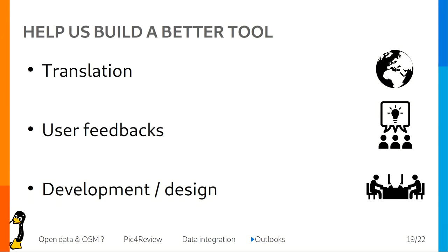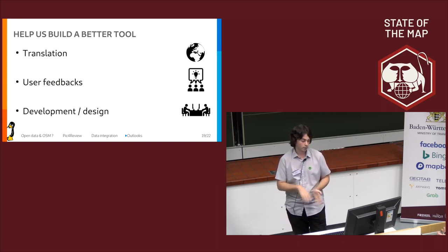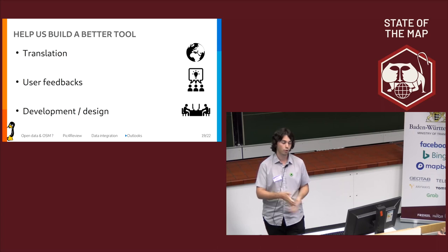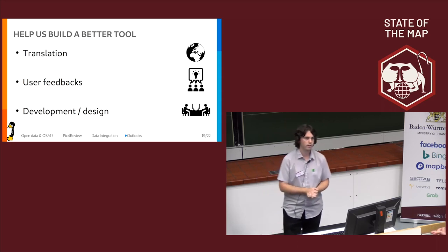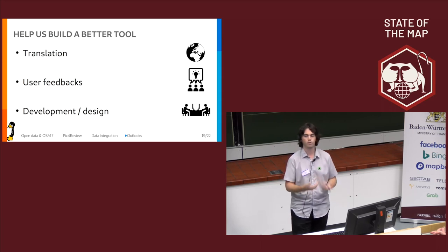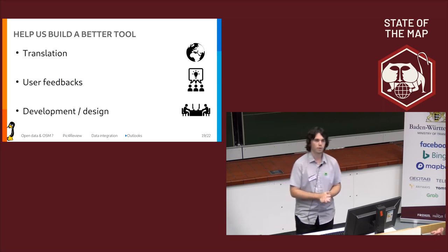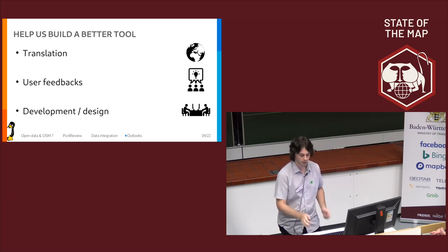PIC4Review is an open source project so you can help make it better. The main things we are looking for are translations — we have around eight languages now, including French, English, Japanese, and maybe Chinese. If you want to make it available in your language you can start translating. User feedback is always welcome. If you find something lacking or a bug, don't hesitate to contact me. Development work to add new features and fix bugs is also very welcome.